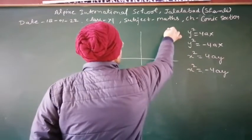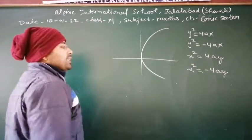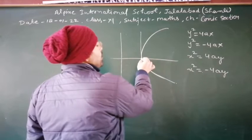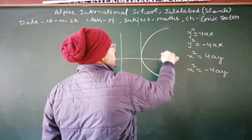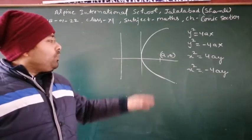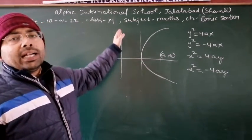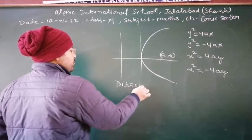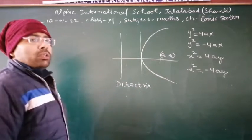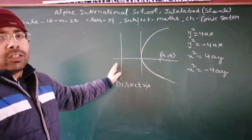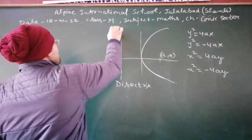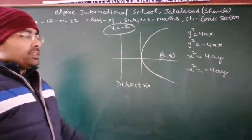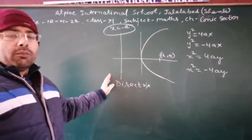The first parabola opens towards the positive axis. The directrix is on the negative side. This line is the directrix, and the equation of the directrix is x = −a. This is the first type of parabola.